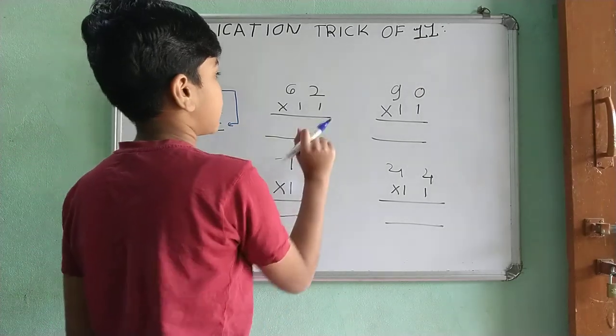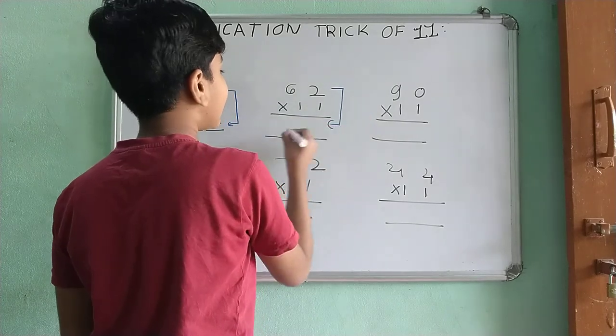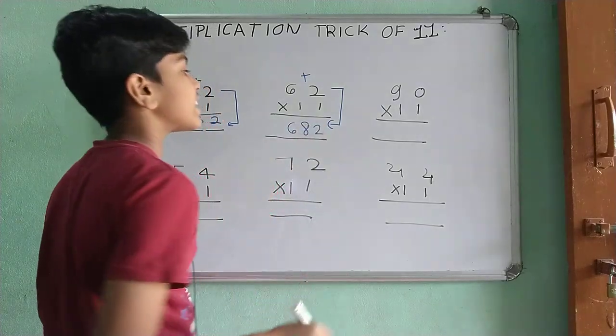Let's try it with this term. 62 multiplied by 11. 62. Bring it down. Add it. It is equal to 682.